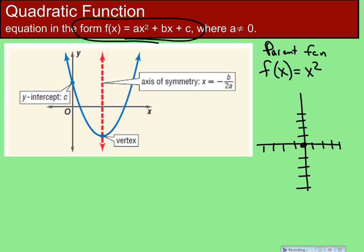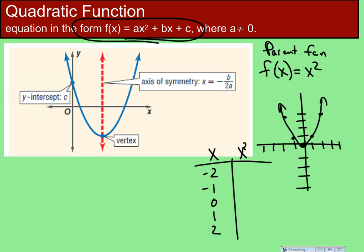Starting at zero, go over one up one, over two up four, then mirror that on the other side. If we plug in generic x-values — negative two, negative one, zero, one, two — we get four, one, zero, one, four. That is the most basic quadratic function. Everything else moves it left or right, up or down, or makes it wider or skinnier.